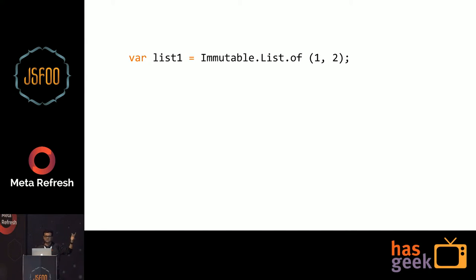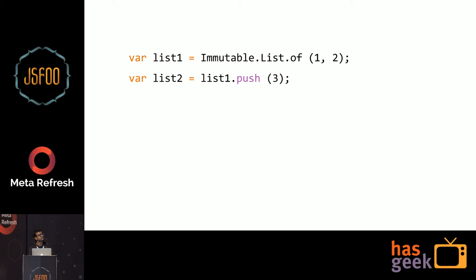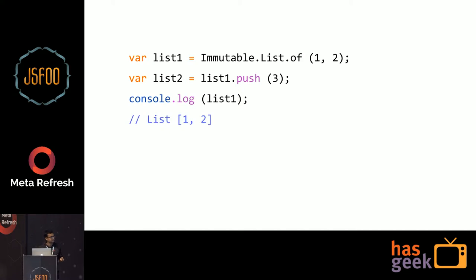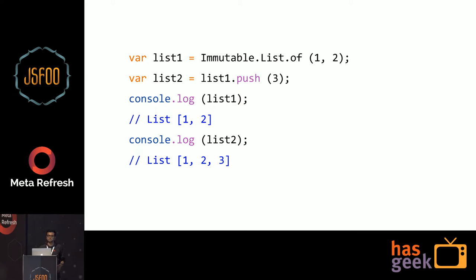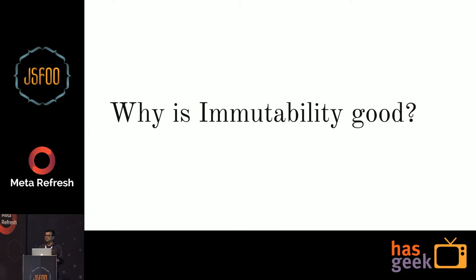Similarly for List, which is Immutable.js's equivalent of arrays. You create a list with values one and two, then do a push of three. On a normal JavaScript array, push updates it in place. But with Immutable.js it's immutable — if you log the second list you get the updated one. So it's a new concept, but why is it actually good? Why should we use immutable data structures?